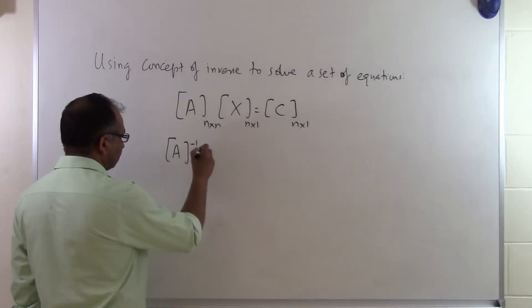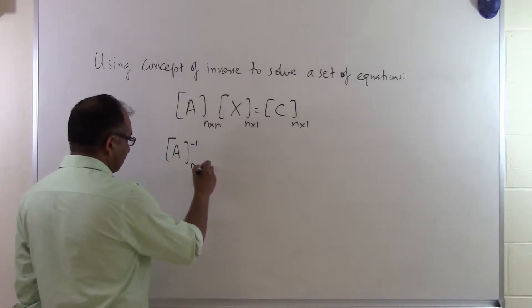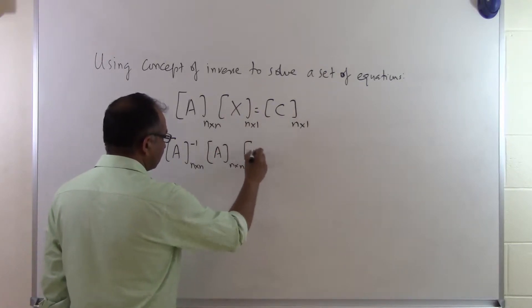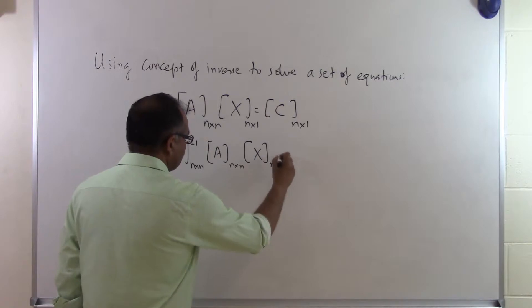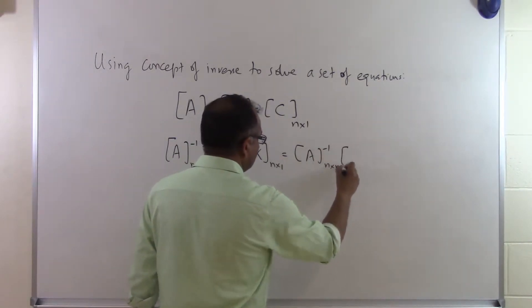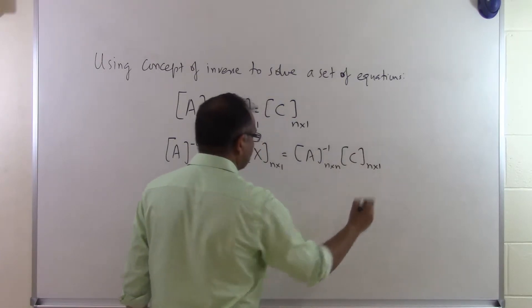If I take A inverse, which I am assuming, which is given to me that it exists, I can multiply both sides by A inverse.